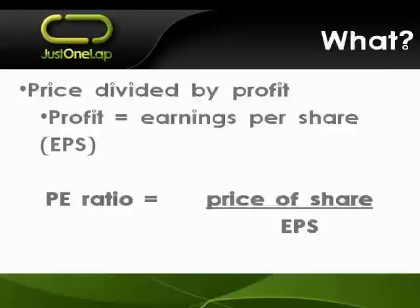Price earnings ratio equals price of the share divided by earnings per share — quite simply, what you're paying divided by the profit. That's why it's considered a metric of value more than anything else: it's telling you what value you're getting. As Buffett says, price is what you pay, value is what you get. That value is broadly more static, while the price changes fairly quickly depending on market volatility — changing day-to-day, minute-to-minute.